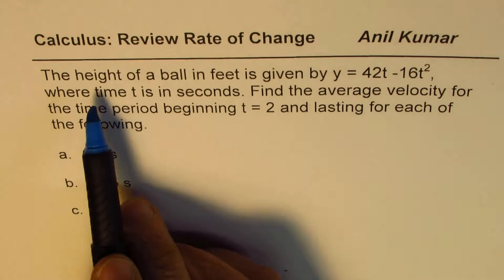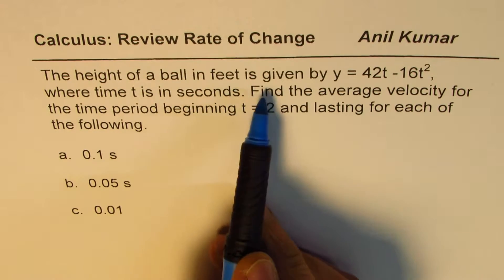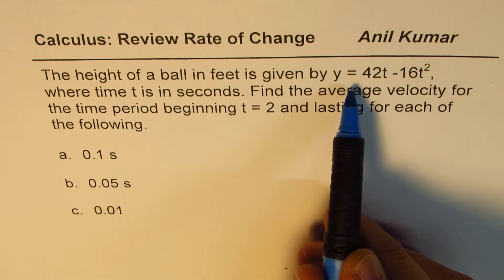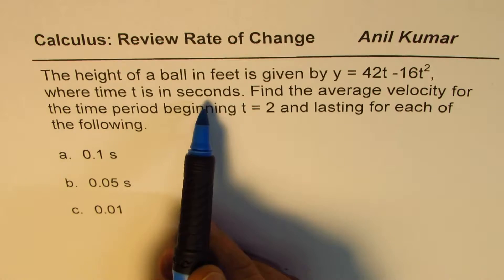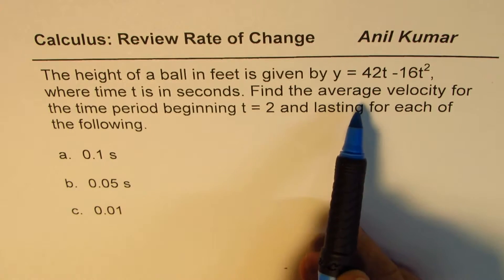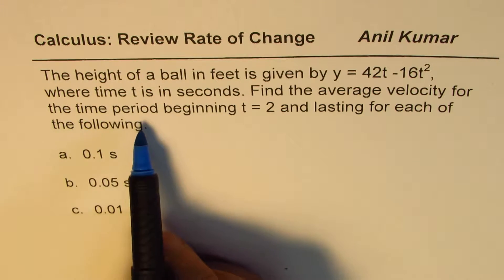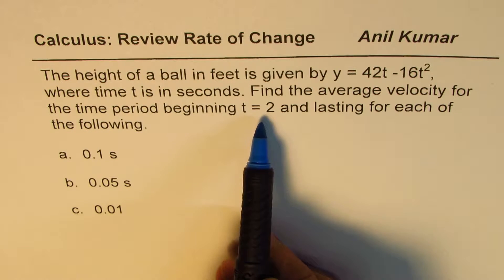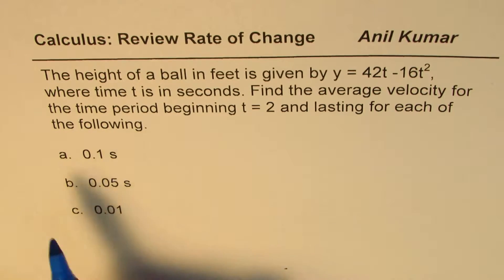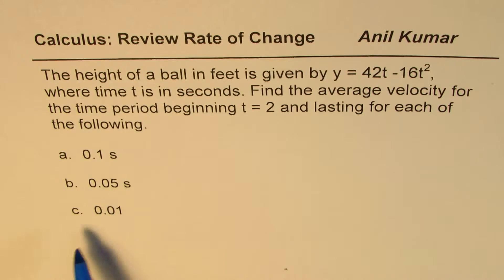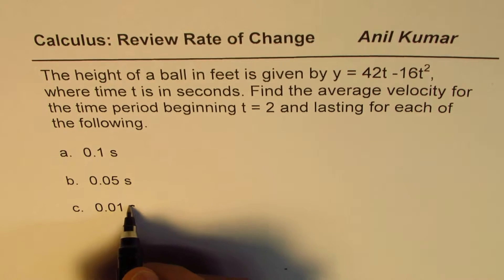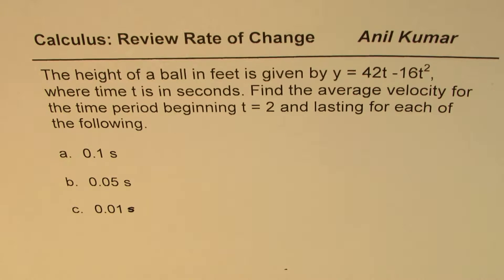The question here is: the height of a ball in feet is given by y equals 42t minus 16t squared, where time t is in seconds. Find the average velocity for the time period beginning t equals 2 and lasting for each of the following: 0.1 seconds, 0.05 seconds, and 0.01 seconds. You can pause the video, answer the question, and then look into my suggestions.